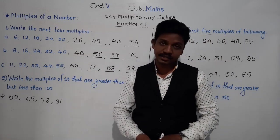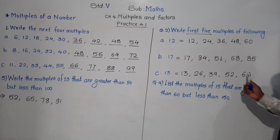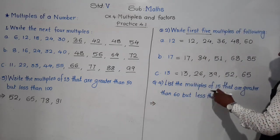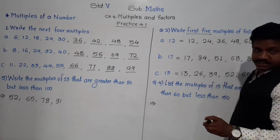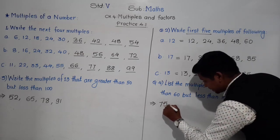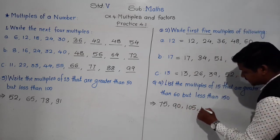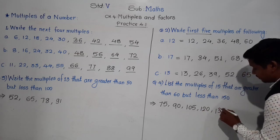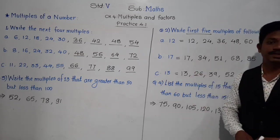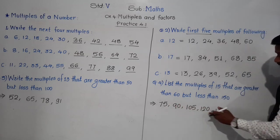These 4 multiples of 13 — 52, 65, 78, and 91 — are between 50 and 100 (greater than 50 and less than 100). Question 4: List the multiples of 15 that are greater than 60 but less than 150. 15×4=60, but we don't take 60. 15×5=75, 15×6=90, 15×7=105, 15×8=120, 15×9=135. 15×10=150, but we don't include 150.